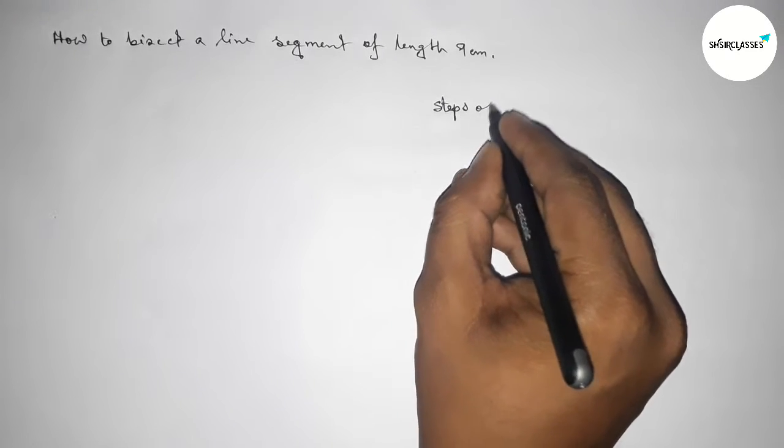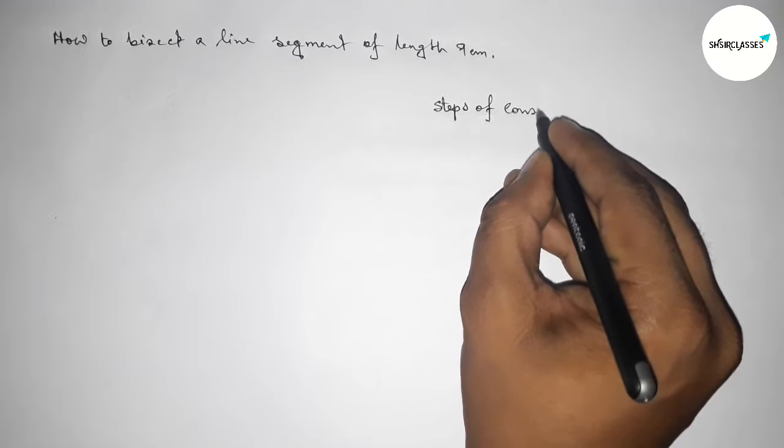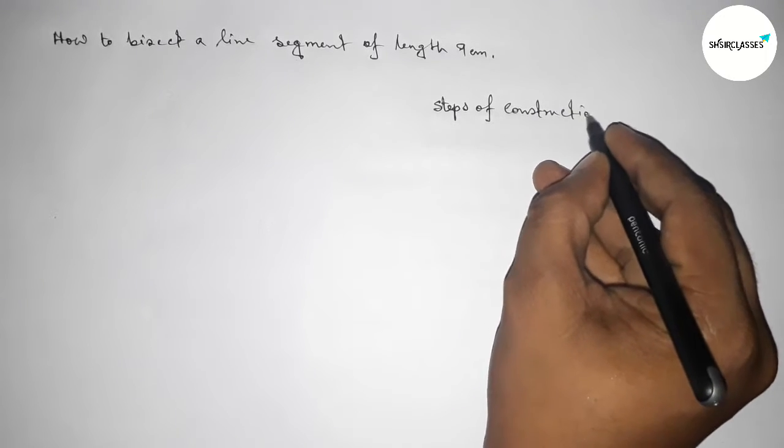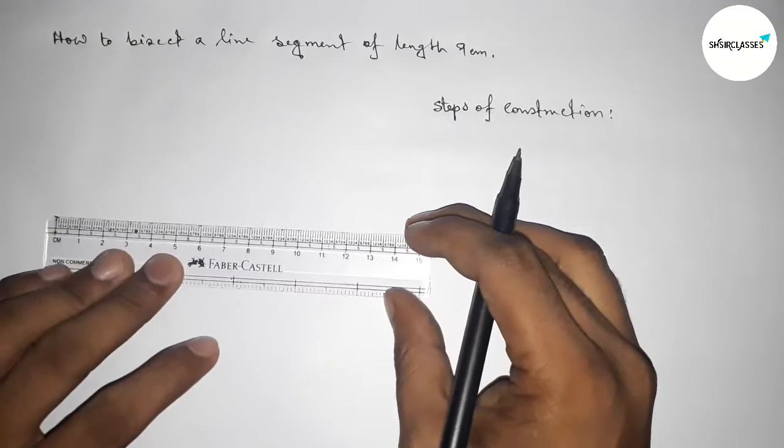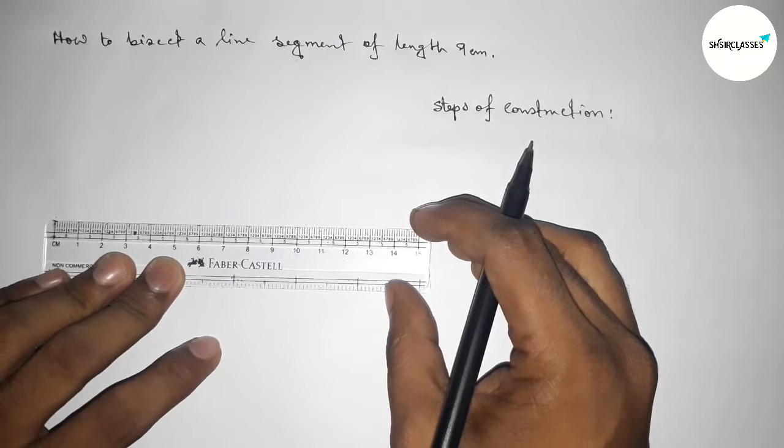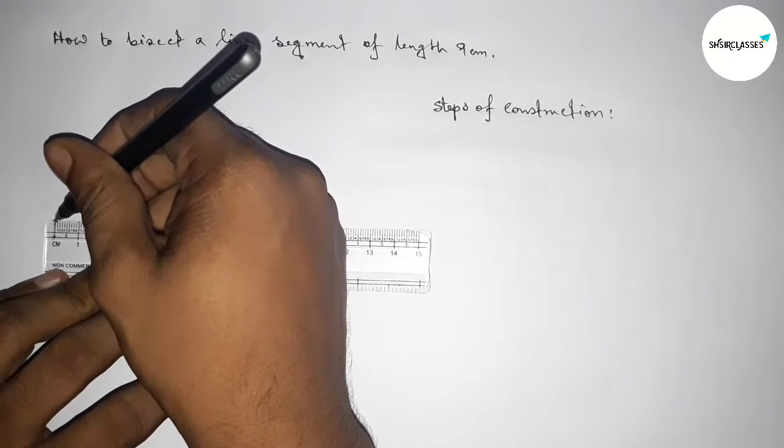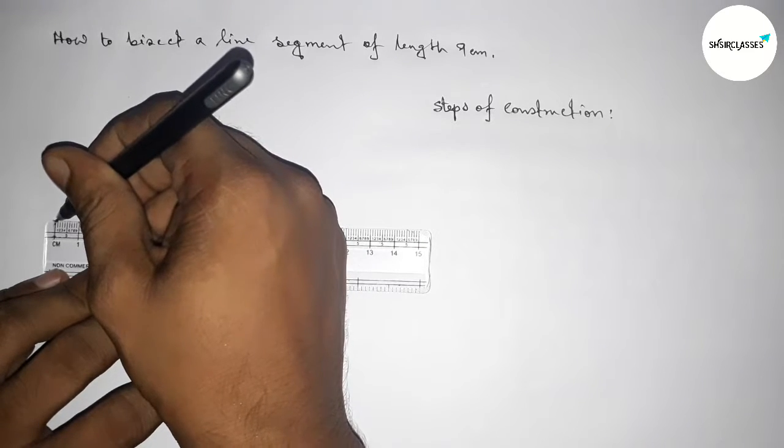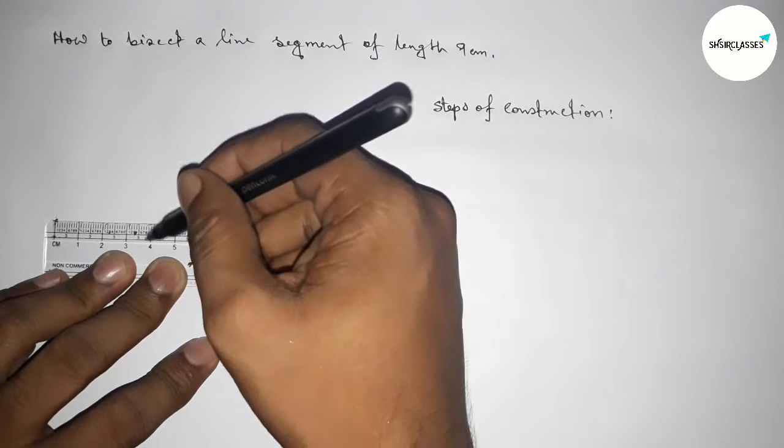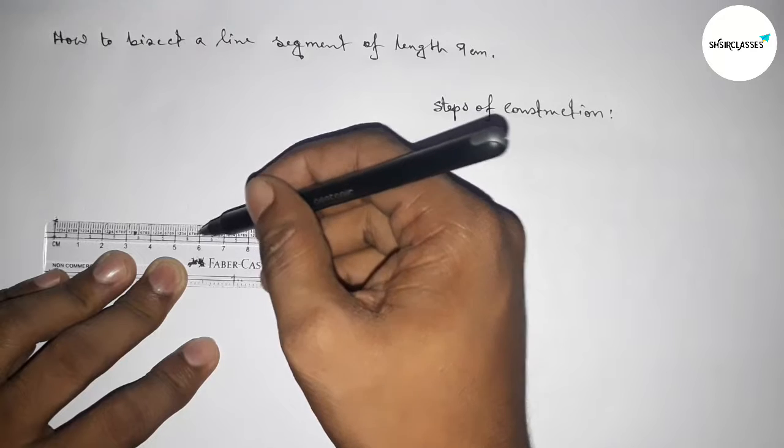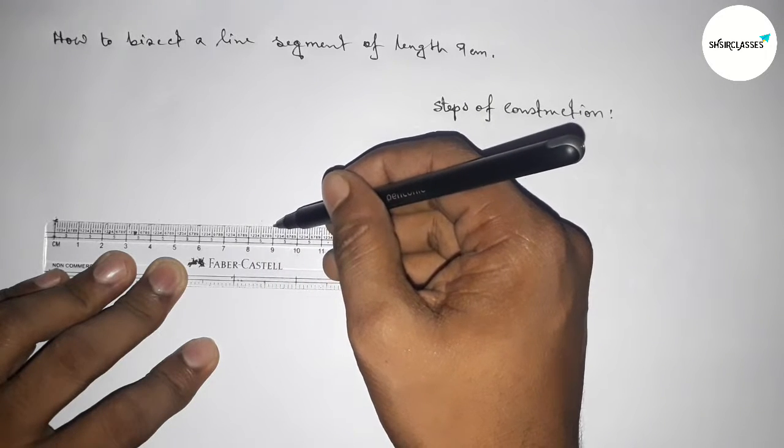Okay, so now first we have to draw a line of length 9 centimeters using a scale. Here this is starting at zero, and this is one, two, three, four, five, six, seven, eight, nine.